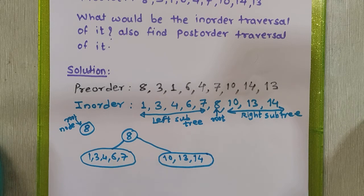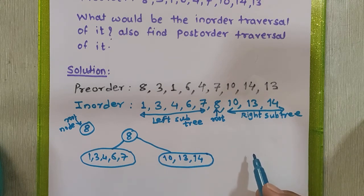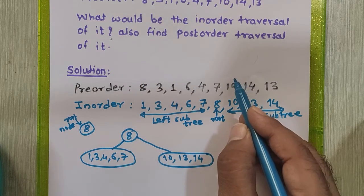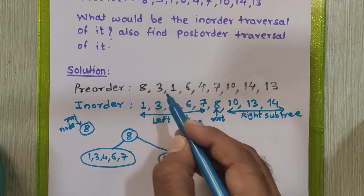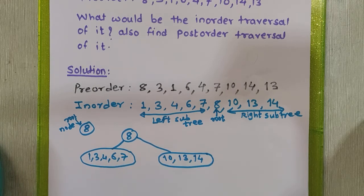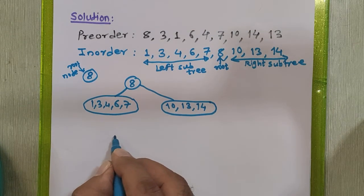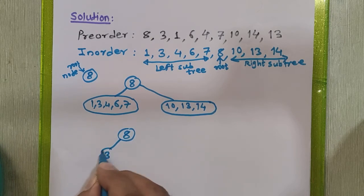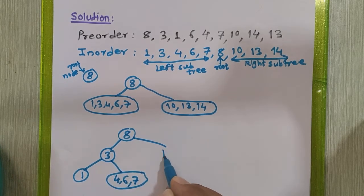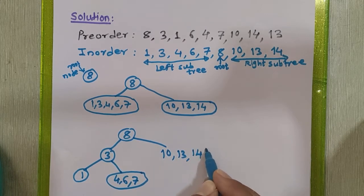This is a recursive algorithm applied until the last element is placed. After root 8, we move left to right in the pre-order sequence — the next root is 3. Checking the in-order diagram, 1 appears on the left of 3 so it goes to the left subtree, while 4, 6, 7 appear on the right so they go to the right of node 3. The remaining data 10, 13, 14 stays as is on the right side.